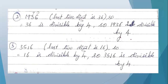The next example is 3516. To check whether it is divisible by 4, we check the last two digits — ones place is 6 and tens place is 1, giving us 16. Is 16 divisible by 4? Yes — 4 fours are 16. So 3516 is also divisible by 4.